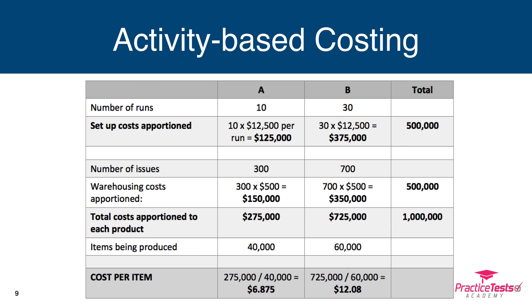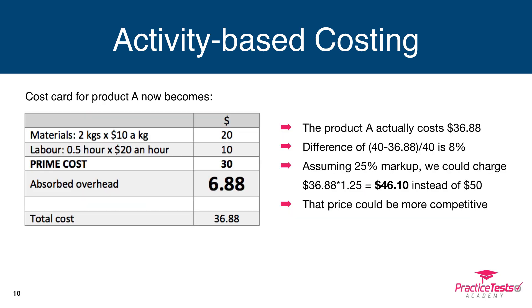Total apportioned costs for product A: $125,000 setup + $150,000 warehousing = $275,000. For product B: $375,000 setup + $350,000 warehousing = $725,000. That's our total $1 million split between the two products according to the activity that drives production. Taking those totals and dividing by units produced: for product A, $275,000 ÷ 40,000 = $6.875 overhead cost per item; and a similar calculation for product B gives $12.08 per item.